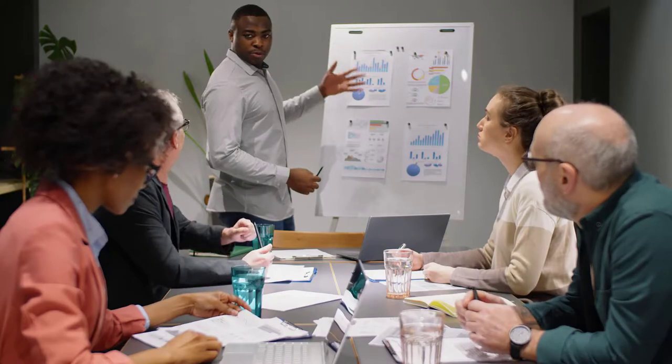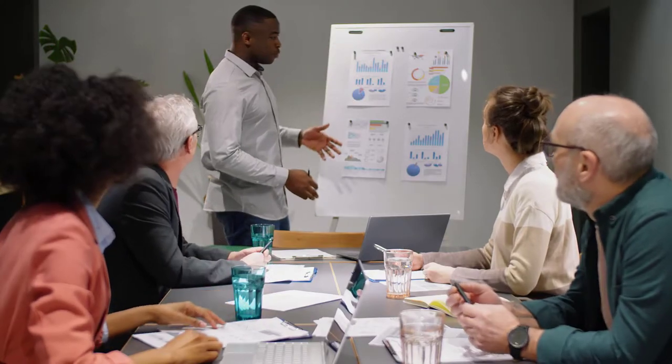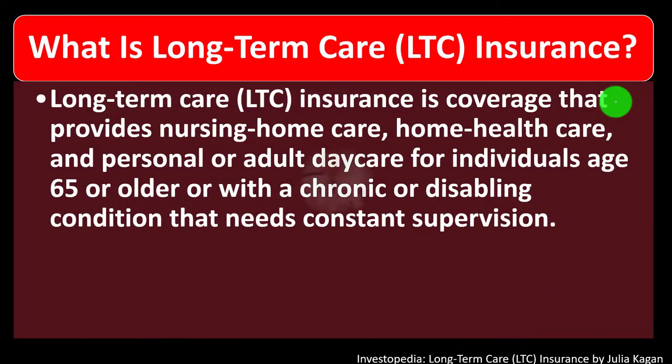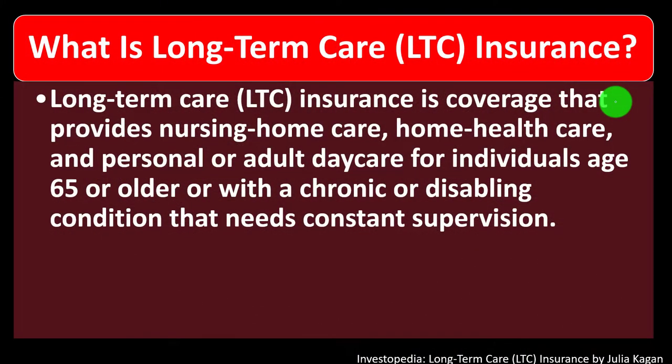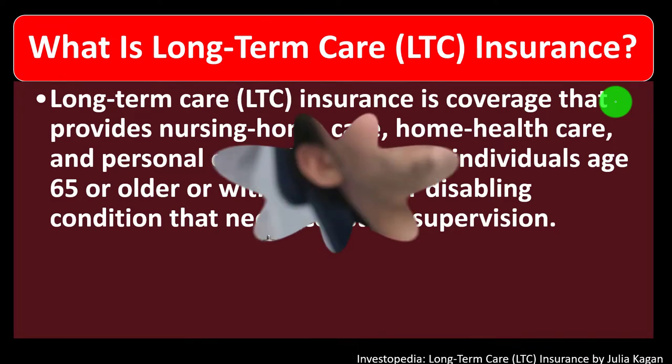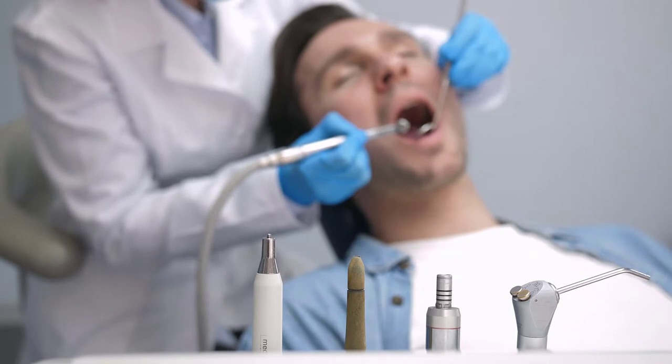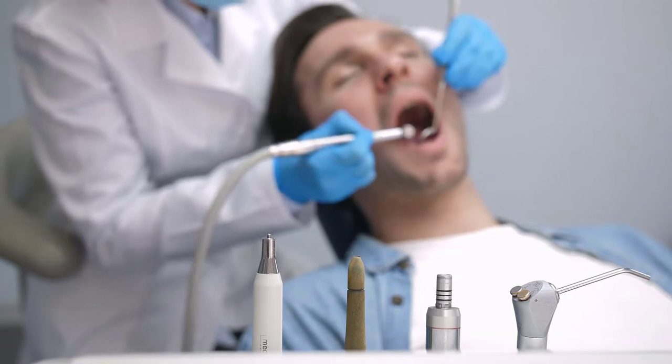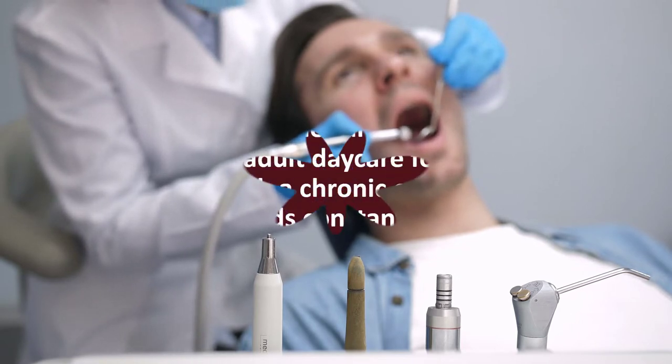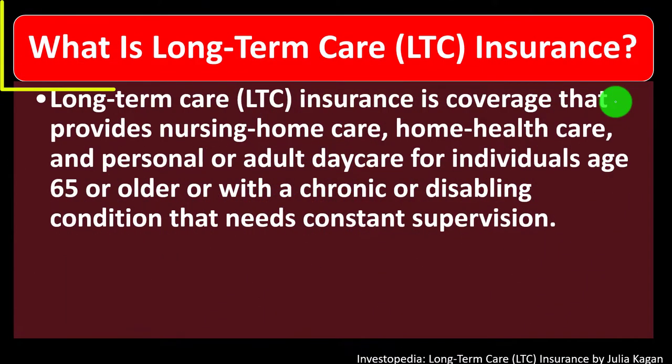In prior presentations, we talked about different types of insurance. Then we went to medical insurance, which has some more complexity due to laws, regulations, and the complexity of the medical field. Then we moved on to dental and vision, which have some components of medical insurance but a different perspective than traditional types of insurance. Now we're looking at long-term care.